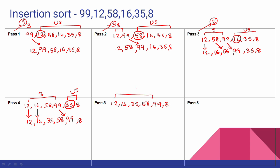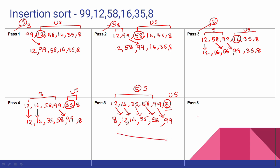Now 5 elements are sorted, 1 unsorted. We take 8 and compare: 99, 58, 35, 16, 12 - all greater than 8. We create space in front and place 8 first. If you enter the last pass, it will be the final answer. If you follow all the steps, you will be able to sort the array.